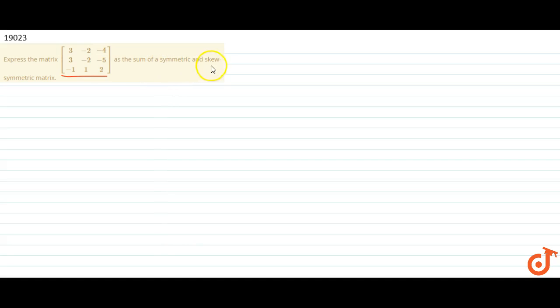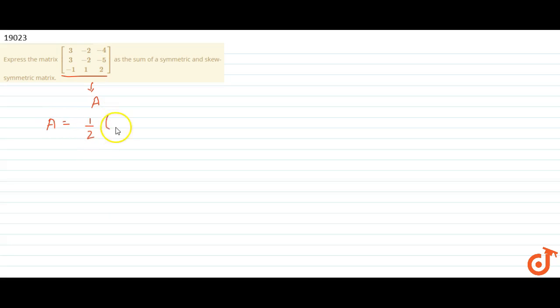In this question, we are given a matrix and we have to express it as a sum of a symmetric and skew-symmetric matrix. Let the given matrix be A. We can write A as 1/2 (A + Aᵀ) + 1/2 (A - Aᵀ).